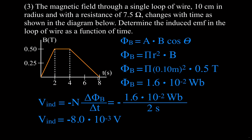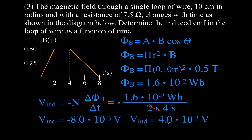For the final section, the flux decreases from 1.6×10⁻² Webers back to 0, over 4 seconds. The calculation is the same except we change the time to 4 seconds, giving an induced voltage of 4×10⁻³ volts. Notice that the first section gives −8×10⁻³ V and this last section gives +4×10⁻³ V — negative times negative is positive, so you must track the negative signs carefully.